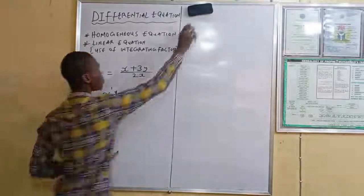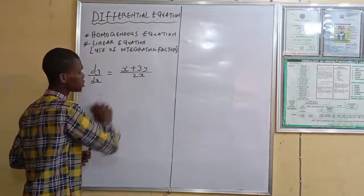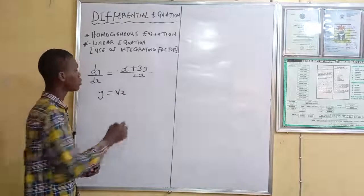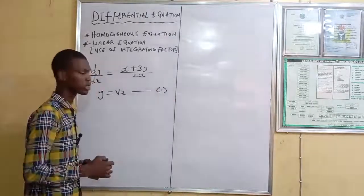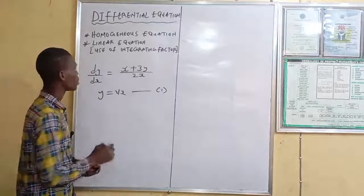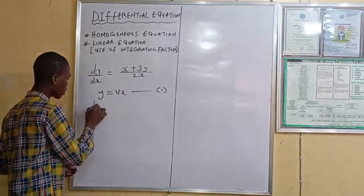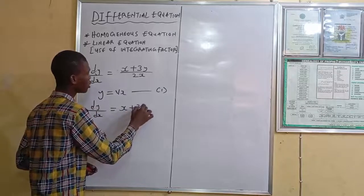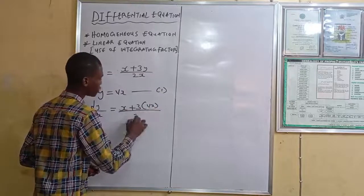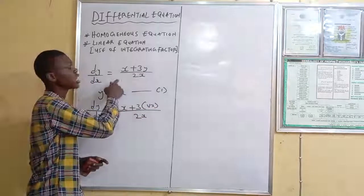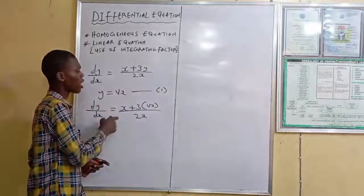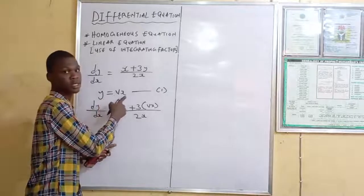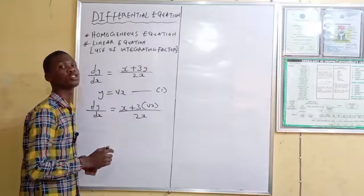Step 2: let y equal vx. You substitute the value of y to be vx. For this given equation, we can write dy/dx equals x plus 3(vx) divided by 2x. This is the original equation rewritten after substituting y = vx. That is the standard procedure for homogeneous equations.